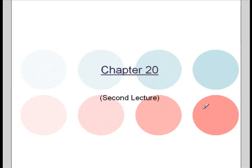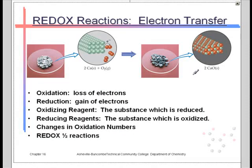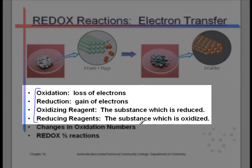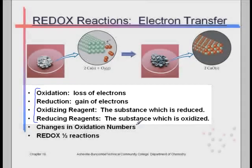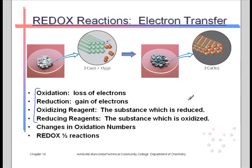In this second video for chapter 20, I want to review the redox reactions, concentrating on the relationship between the key terms. I pulled this from chapter four — it would probably be useful to review that. Here, I want to use the chemical reaction of calcium being oxidized by oxygen from the air to form calcium oxide, to look at the half reactions and extend that to the oxidizing agent and reducing agent. This is really a continuation from the first material for chapter 20.